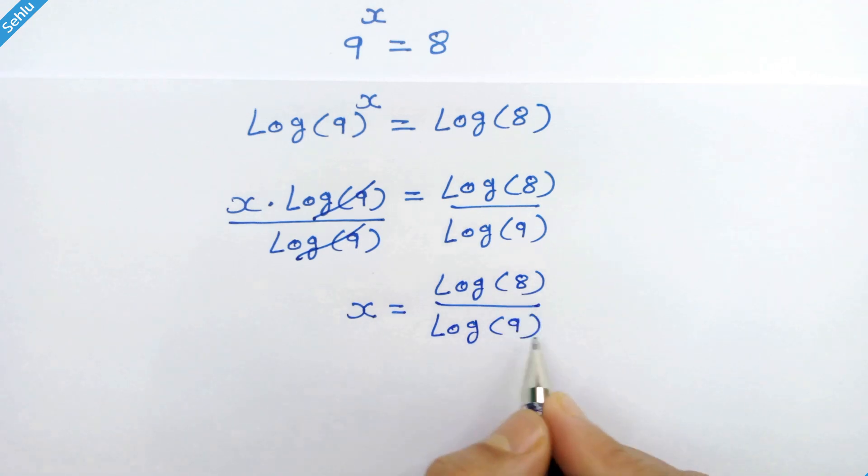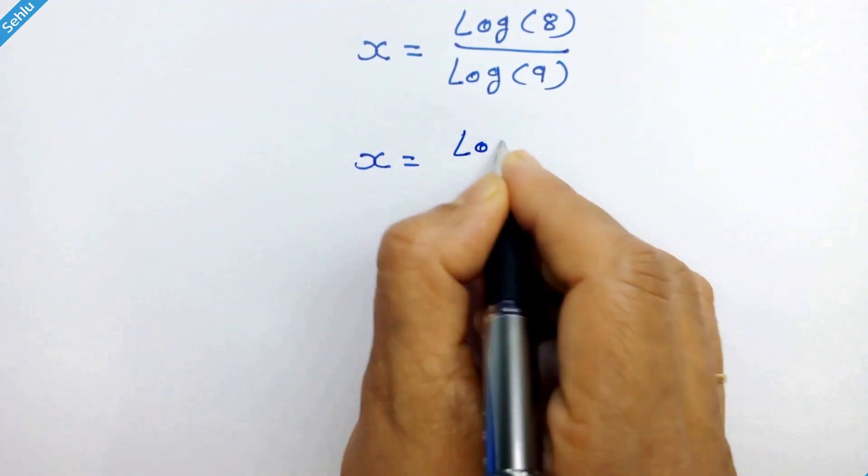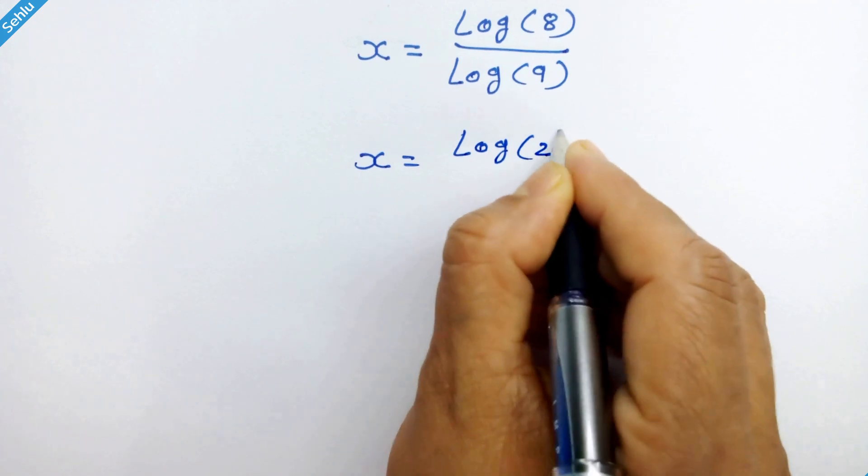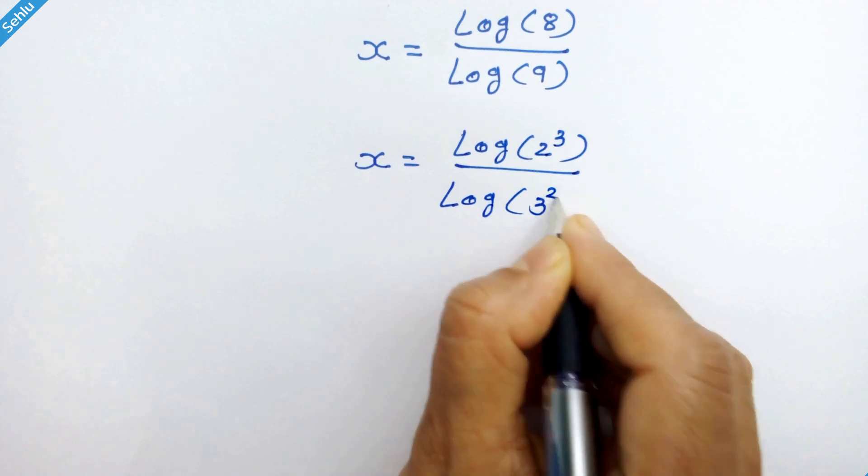8 is 2 cube and 9 is 3 square. So we can write it: x is equal to log of 2 cube over log of 3 square.